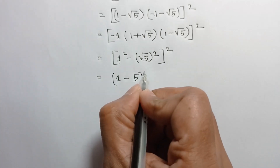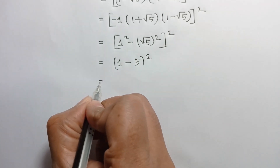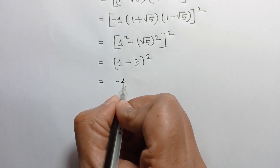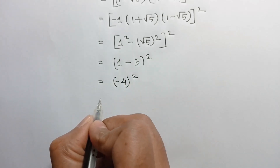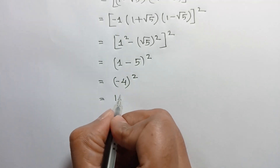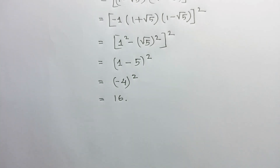So this equals 1 squared minus square root of 5 whole squared, which is 1 minus 5 equals negative 4, whole squared. Negative 4 squared is equal to 16. So 16 is the value of this expression. If you like this video, please subscribe to my channel. Thanks for watching.